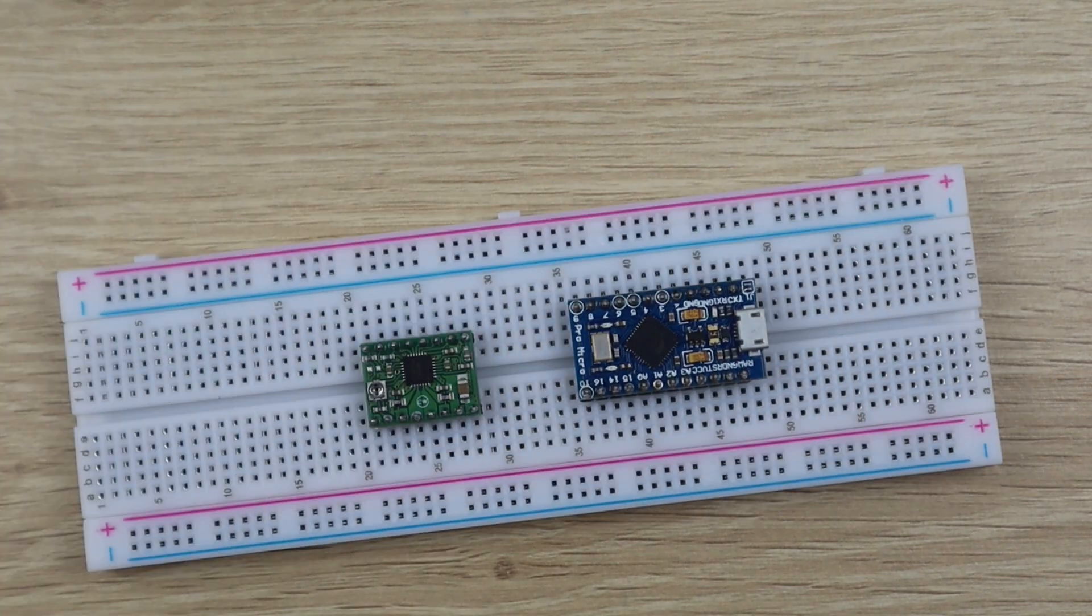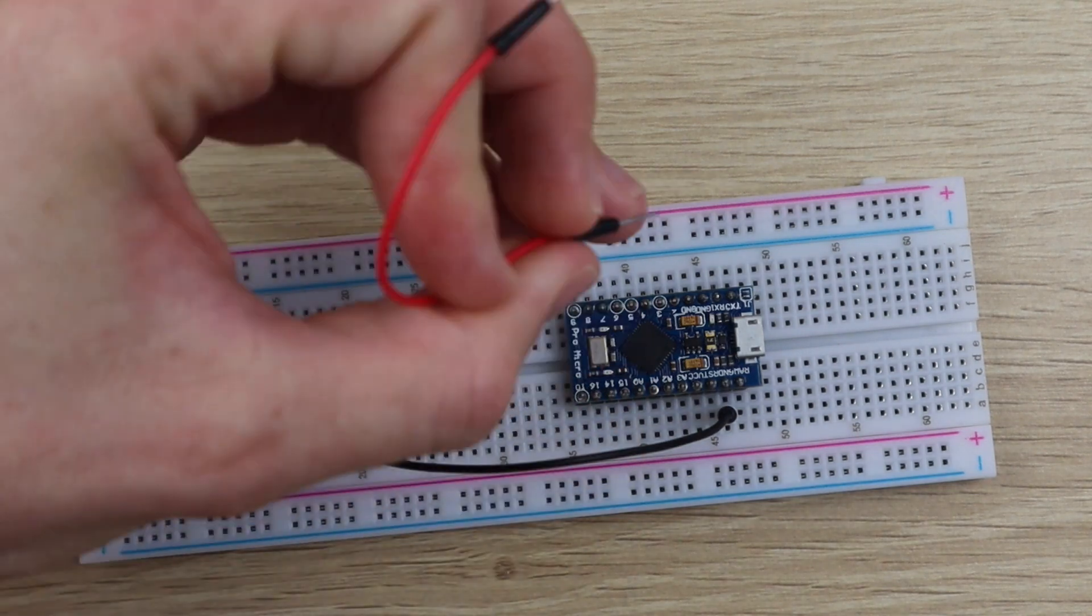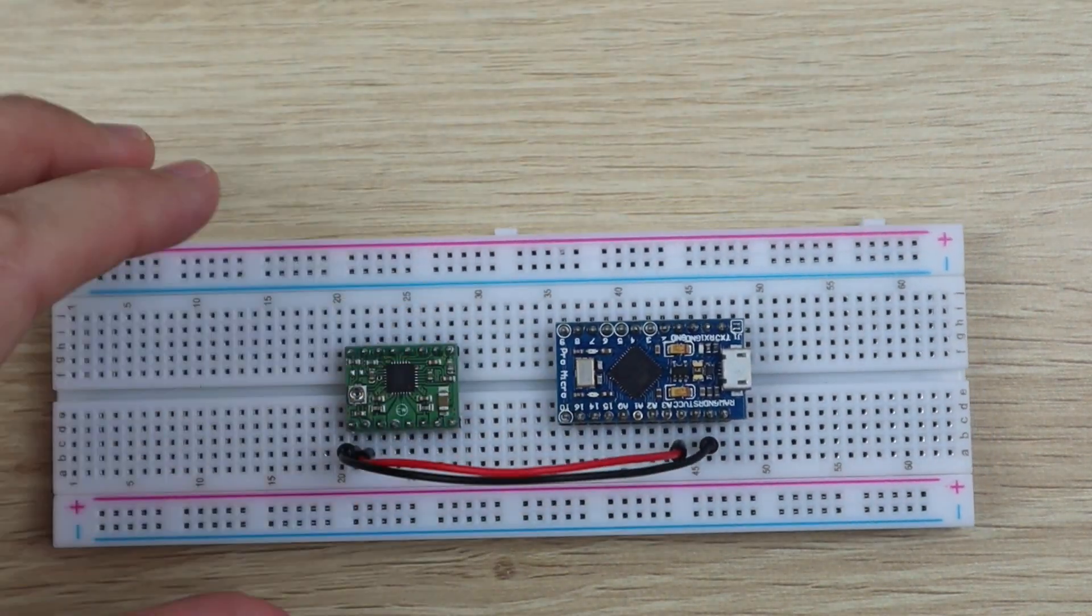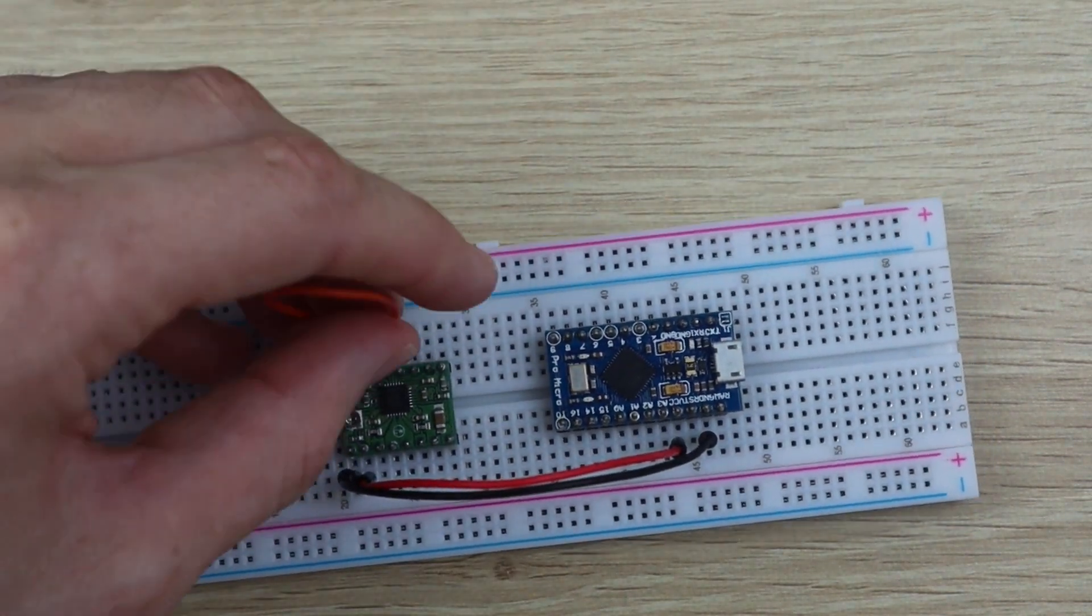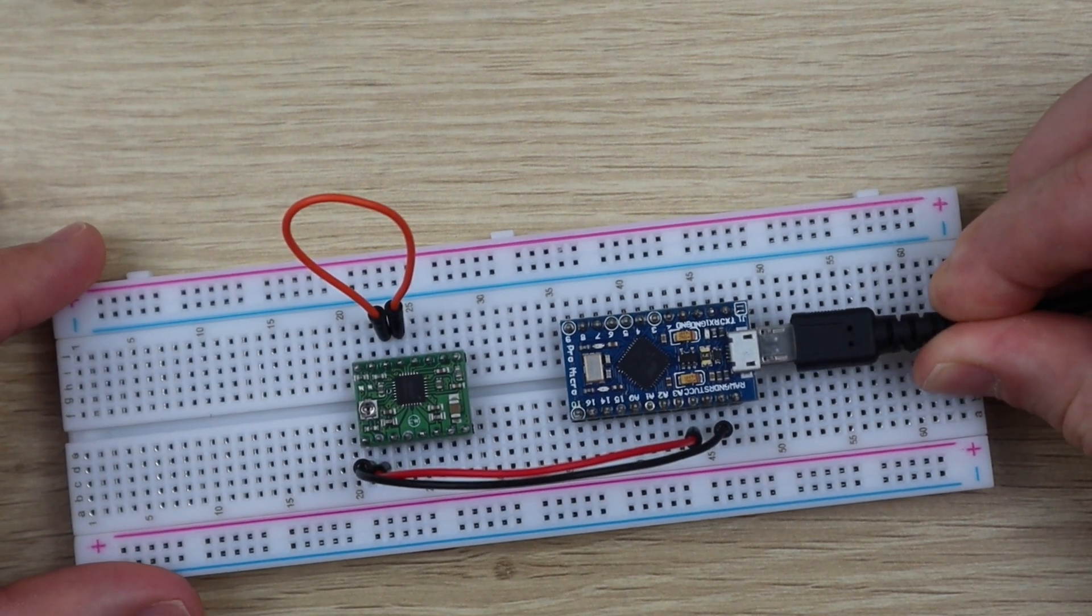There's one more thing to set up before powering up your Arduino. You need to set the motor current limit on the driver. To do this, you'll need to power up the driver, which can be done by supplying 5 volts to the logic circuit using your Arduino.